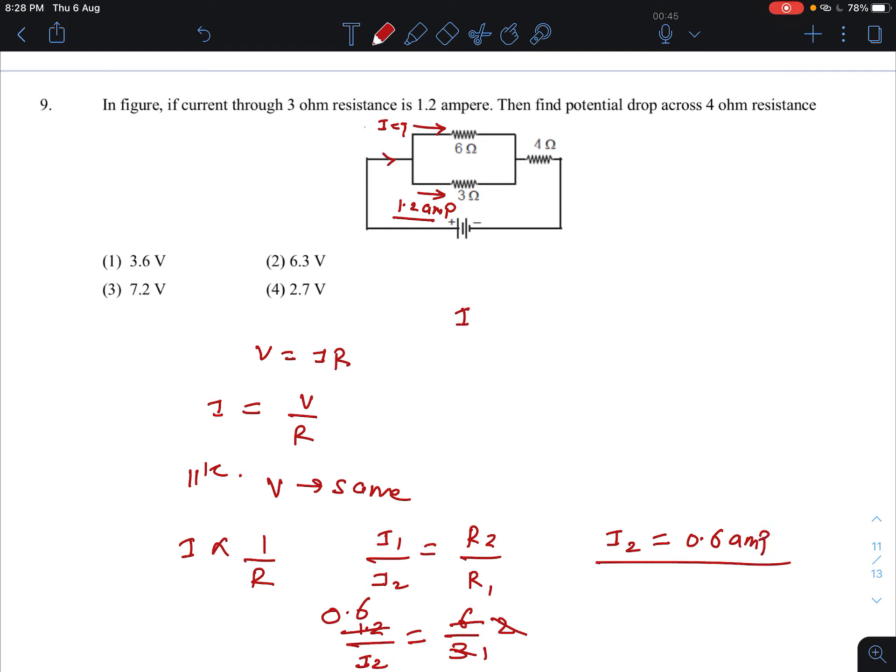Total current I equals current through 3 ohm plus current through 6 ohm. Current through 3 ohm is 1.2, current through 6 ohm is 0.6. So the total current is 1.8 ampere.